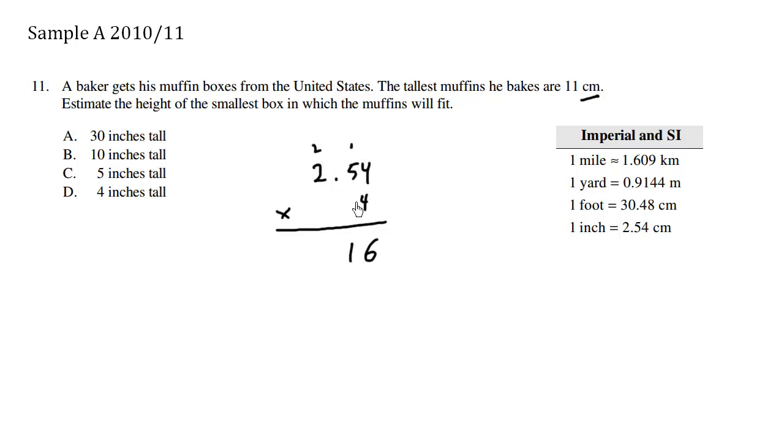We carry the 2 here. 2 times 4 is 8, 8 plus 2 is 10. And the decimal here has 2 digits after, so we move 1, 2. So 2.54 times 4 is 10.16.